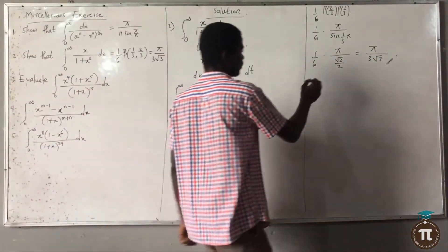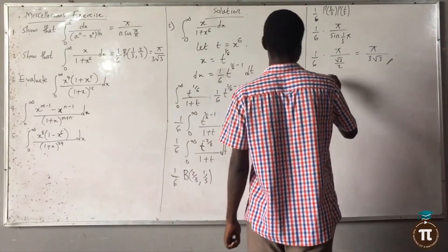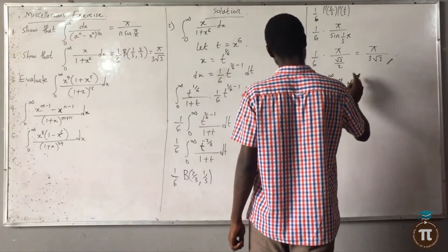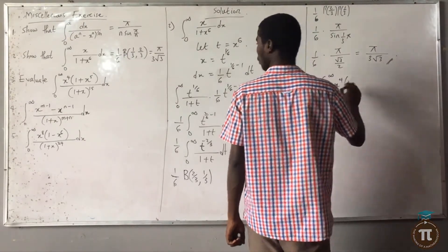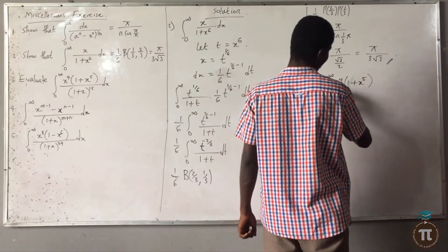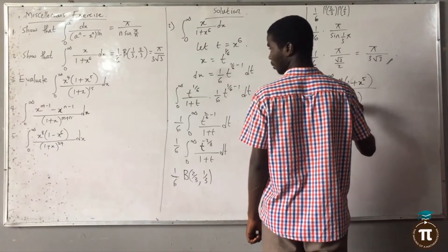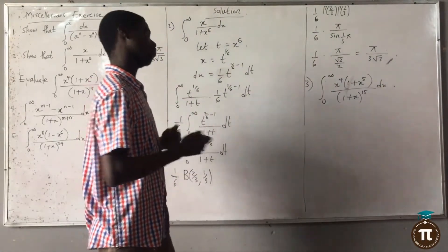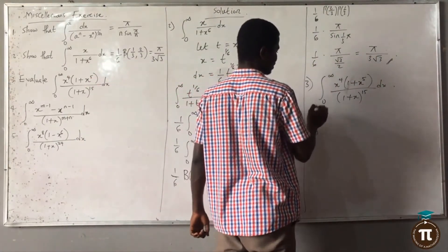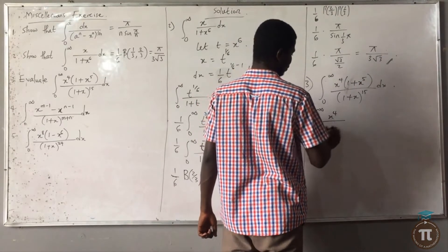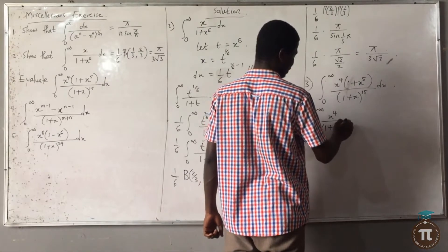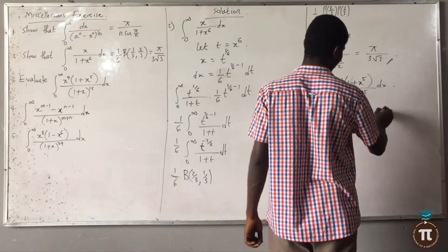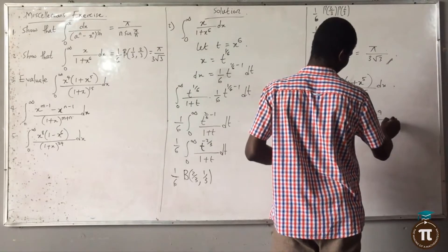For question 3, we evaluate the integral from 0 to infinity of s^4 times (1 plus s^5) over (1 plus s^15) ds. This splits into the integral from 0 to infinity of s^4 over (1 plus s^15) ds, plus the integral from 0 to infinity of s^9 over (1 plus s^15) ds.